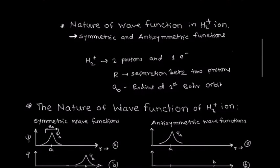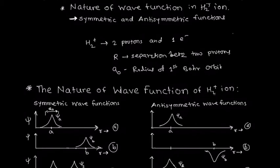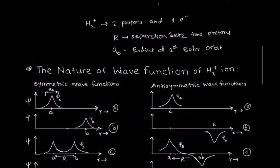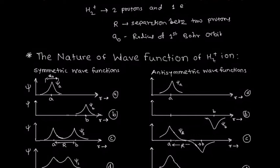We draw the nature of the wave function of the electron around the two protons A and B, and separately explain the anti-symmetric and symmetric wave functions. For the symmetric wave function, if the separation between the two protons is very large in comparison with the radius of the first Bohr orbit, the behavior of the wave function is exactly similar to that of the hydrogen atom in the 1s state.